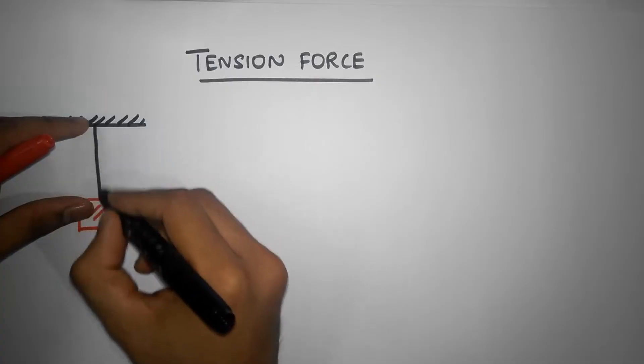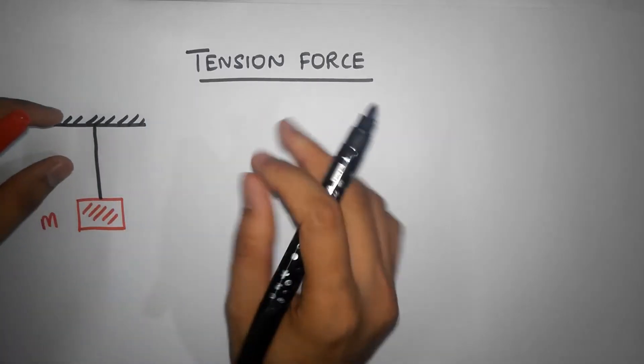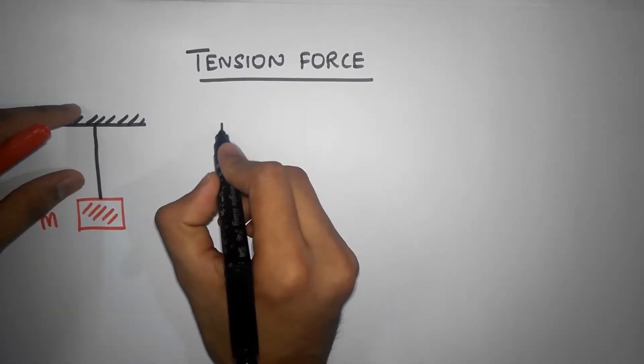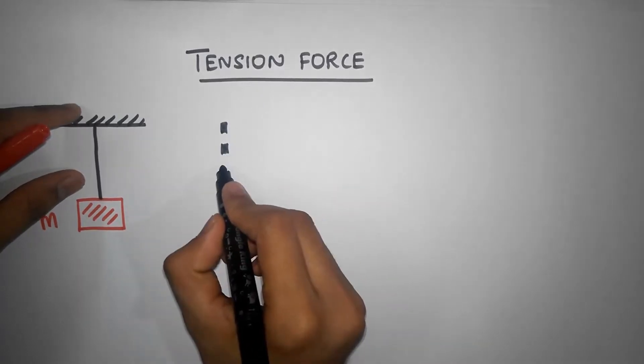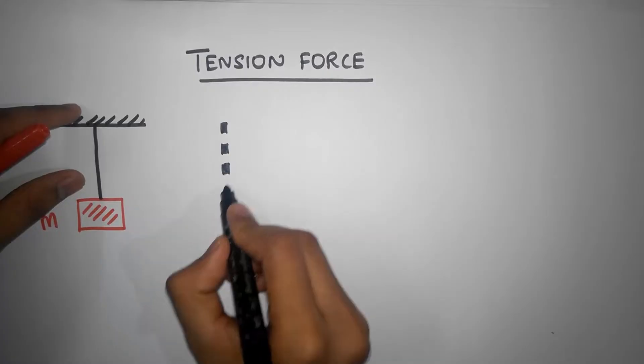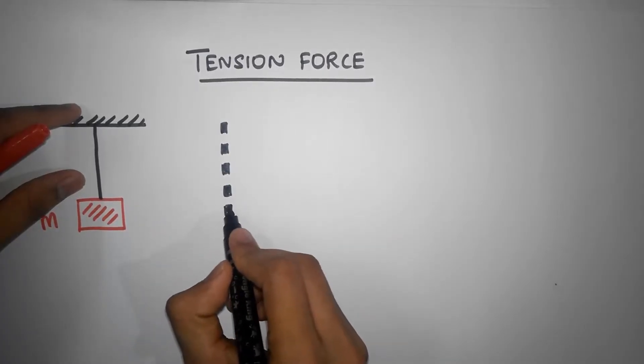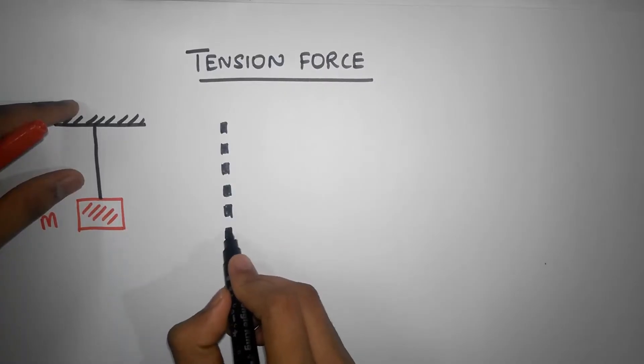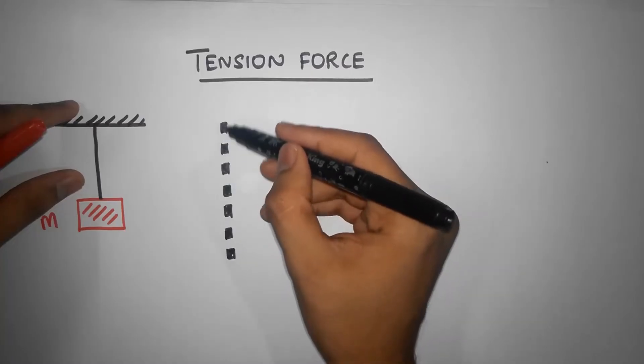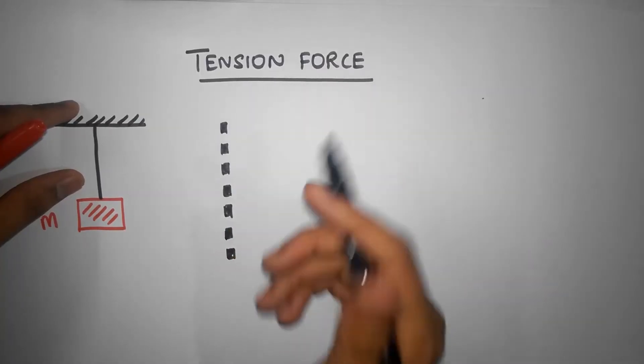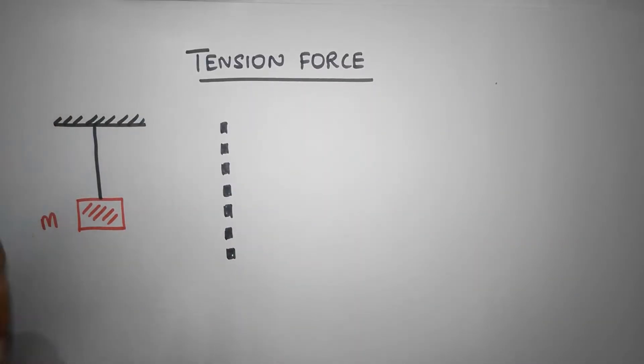The way it works is like the following. You can imagine that this string is made up of tiny, tiny parts. So imagine you have one part here, you have another part here, another part here, this way, like so many parts this way. You can imagine these individual parts are held together by intermolecular forces, and eventually we end up with this big mass over here.